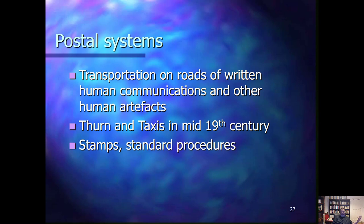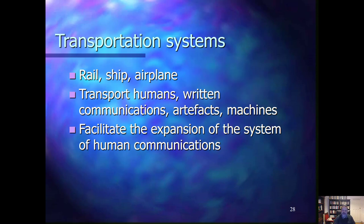In the mid-19th century we get the expansion of postal systems. There were some variants in the previous few hundred years, but in the mid-19th century the postal taxes helped establish a proper postal system in Germany, which then spread to other countries. In Britain, postal stamps were introduced and other standardized procedures were introduced in the postal system, which allowed the expansion of the use of transportation over the roads. By standardization, it makes processing easier and less likely to make errors, so the transportation system could expand much more.